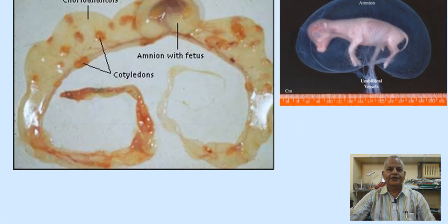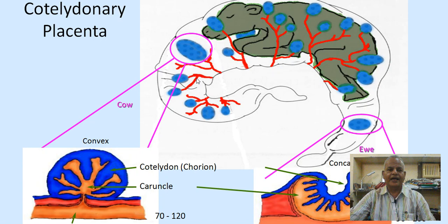Here you can see the chorioallantoic membrane and the amnion with the fetus. These are the cotyledons and this is the umbilical cord. This is the cotyledonary type of placenta. In cattle, the cotyledon is convex, while this is the endometrium and the caruncle. In sheep, the cotyledon is concave.